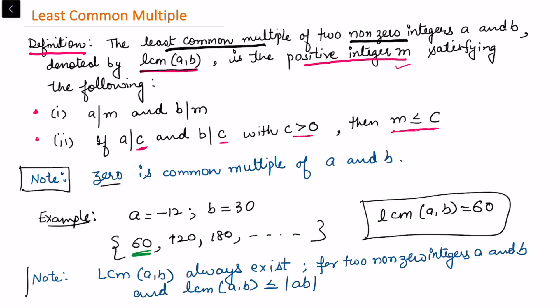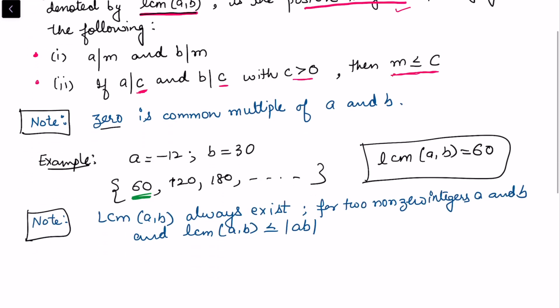And we also note that least common multiple of a and b always exists for two non-zero integers a and b, and the least common multiple has an upper bound that is equal to the product of absolute value of a and b.